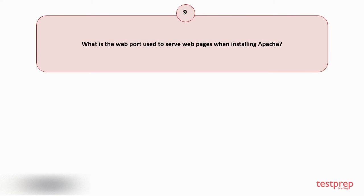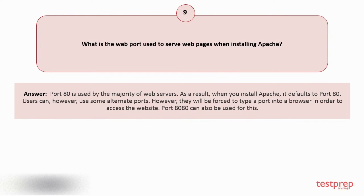Question number 9: What is the web port used to serve web pages when installing Apache? Port 80 is used by the majority of web servers. As a result, when you install Apache, it defaults to port 80. Users can, however, use some alternate ports, but they will be forced to type a port number into a browser in order to access the website. Port 8080 can also be used for this.